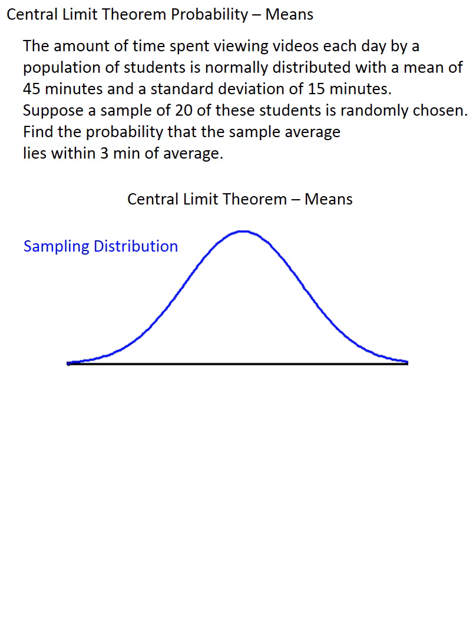Now, why is that? Well, because the original population is normally distributed, so too will the sampling distribution be. And notice that the sample size of 20 here is less than the 30 that would be required if we didn't know the original population viewing times were normally distributed. But since we do know that the original population is normally distributed, it doesn't matter that the sample size is less than 30. We can still use the central limit theorem.